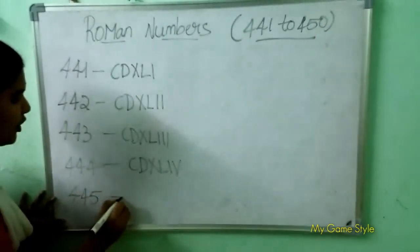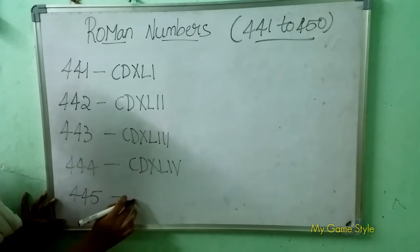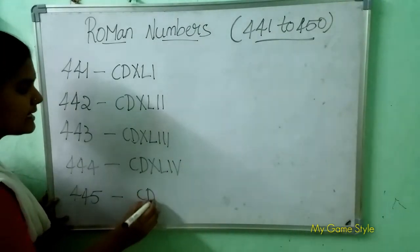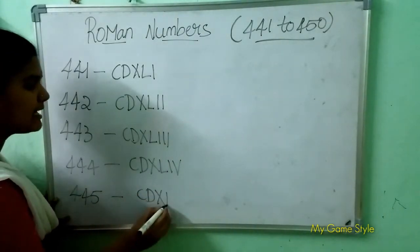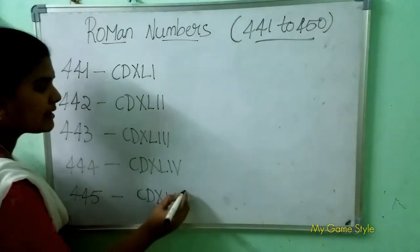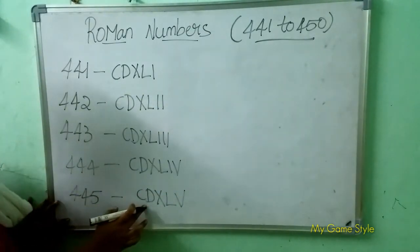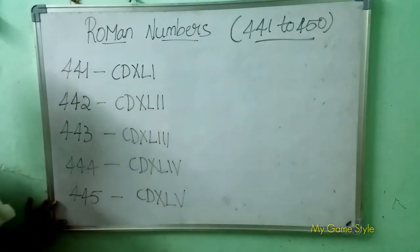445 means 445. So how to write 445 here? CD is 400, XL is 40, V is 5. So this means 445.